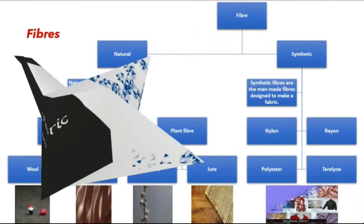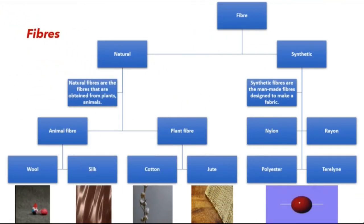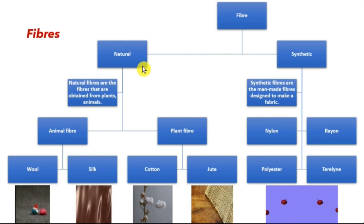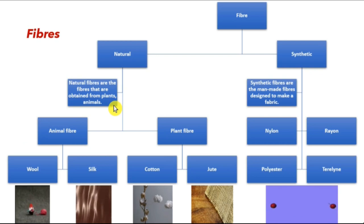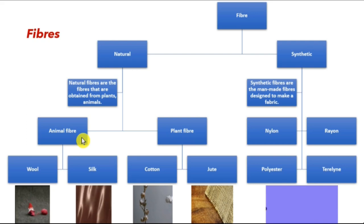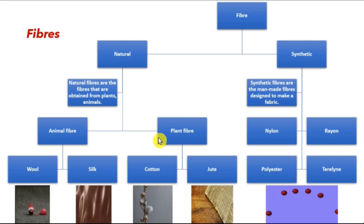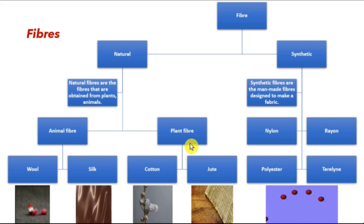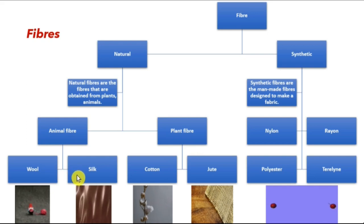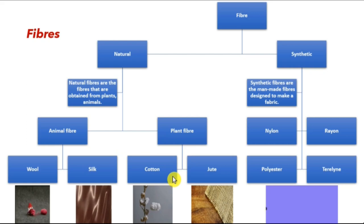Fibers are classified into two types: natural fibers and synthetic fibers. Natural fibers are the fibers obtained from plants and animals — basically obtained from nature. They are again classified into two types: animal fiber and plant fiber. Animal fibers examples are wool and silk, which we will be covering in this chapter, and plant fibers like cotton and jute we already learnt last year.